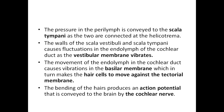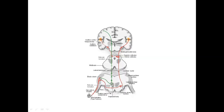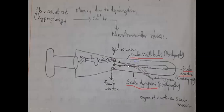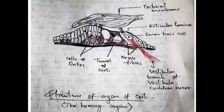This touching of the hair to the tectorial membrane results in bending of the cilia of the hair cells. This bending results in entry of potassium ions into the hair cells, which ultimately results in the formation of an action potential. This action potential generated in the hair cells will be communicated to the auditory center through the auditory nerve. The hair cells touch the tectorial membrane and the action potentials generated are transmitted through axons to the vestibulocochlear nerve.